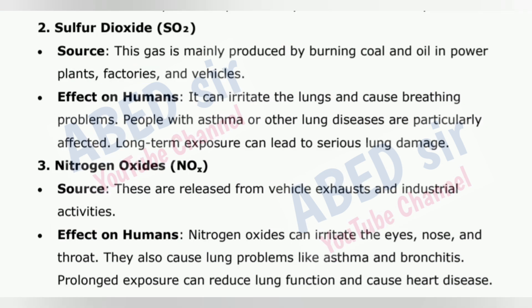2. Sulfur dioxide (SO₂): Source — this gas is mainly produced by burning coal and oil in power plants, factories and vehicles. Effect on humans: It can irritate the lungs and cause breathing problems. People with asthma or other lung diseases are particularly affected. Long-term exposure can lead to serious lung damage. 3. Nitrogen oxides (NOₓ): Source — these are released from vehicle exhausts and industrial activities. Effect on humans: Nitrogen oxides can irritate the eyes, nose and throat.